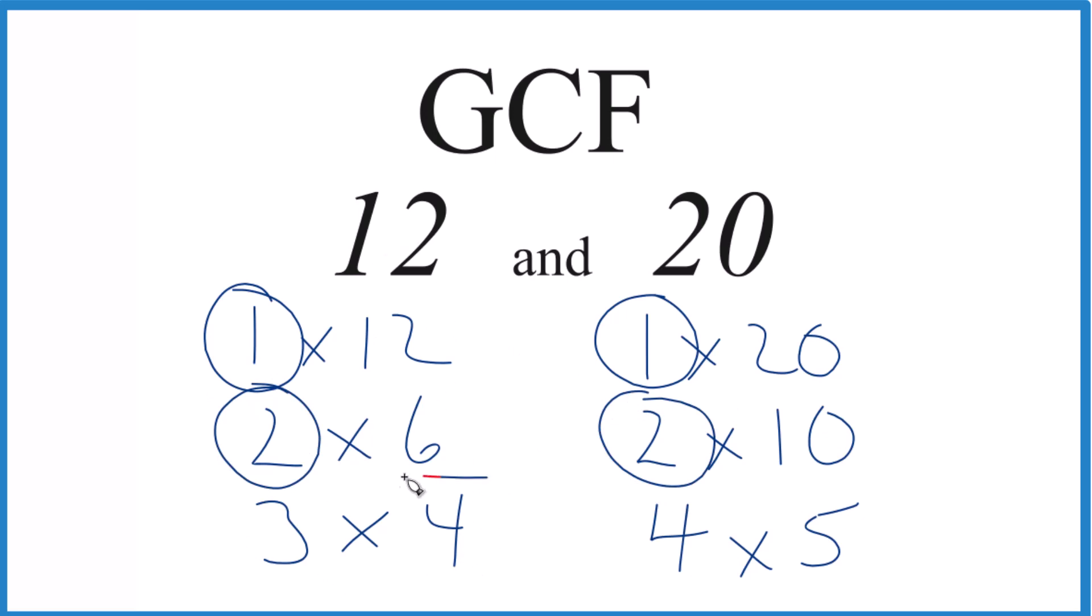And it looks like 4 is the greatest common factor. It's the largest number on our lists here that goes into 12 and 20 evenly. That makes it the GCF.